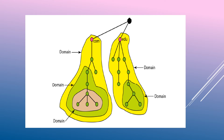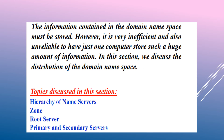A domain is a subtree of the domain namespace. The name of the domain is the domain name of the node at the top of the subtree. A domain may itself be divided into a number of subdomains, such as com and further nested levels. The information in the domain namespace must be stored, but it is inefficient and unreliable to have just one computer store such a huge amount of information. Therefore, the distribution of the domain namespace is carried out with a hierarchy of name servers, zones, root servers, and primary and secondary servers.